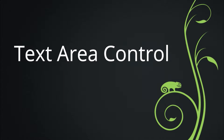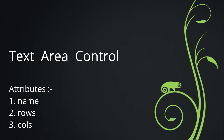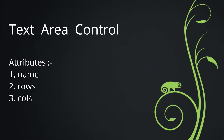Multiline input controls are created using the HTML textarea tag. There are many attributes in the textarea control. Some of them are: name, rows, and cols. The name attribute is used to give a name to the control, which is sent to the server to be recognized and retrieve the value.